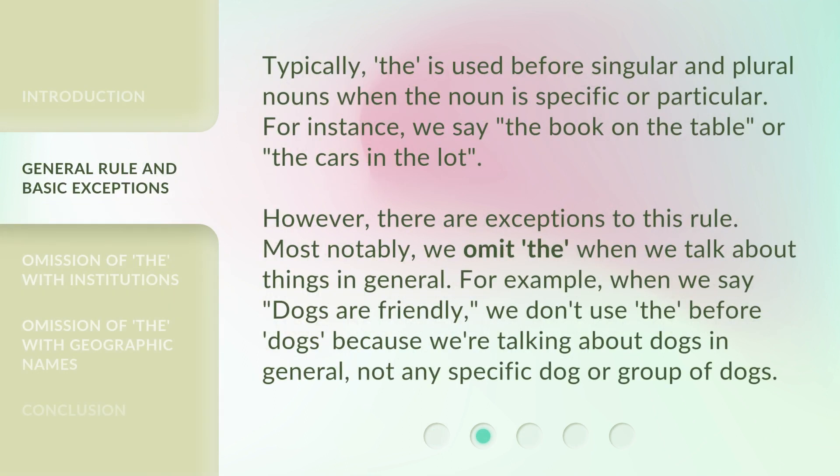Typically, "the" is used before singular and plural nouns when the noun is specific or particular. For instance, we say "the book on the table" or "the cars in the lot." However, there are exceptions to this rule. Most notably, we omit "the" when we talk about things in general. For example, when we say "dogs are friendly," we don't use "the" before "dogs," because we're talking about dogs in general, not any specific dog or group of dogs.